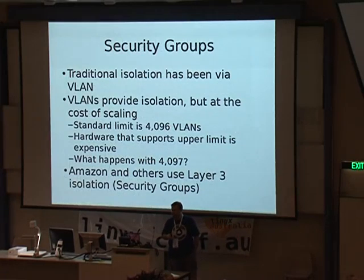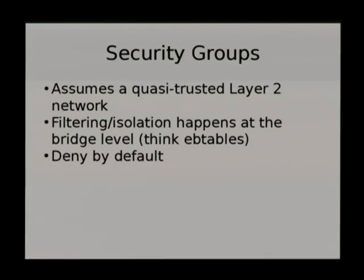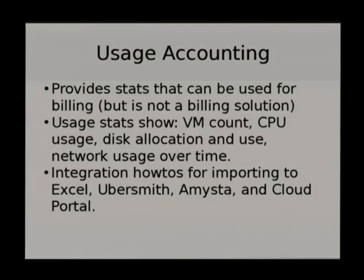Security groups, for folks that don't want to depend on VLANs, provide layer 3 isolation very similar to what Amazon has. You assume a quasi-trusted layer 2 network, and all filtering and isolation happens at the bridge — default is deny all traffic. Usage accounting provides all the stats and information you would need for billing: VM count, CPU usage, disk allocation, and all of that. There are integration how-to guides for using this data with Excel, Amaya, Ubersmith, and Cloud Portal.